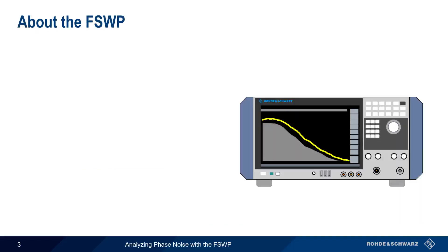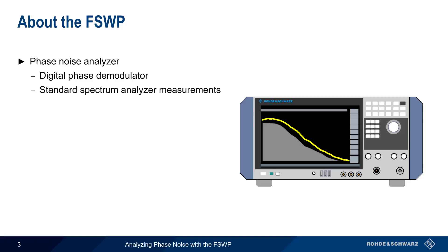Let's start with a brief overview of the FSWP. The Rohde & Schwarz FSWP is a phase noise analyzer that measures phase noise directly using a digital phase demodulator. The FSWP can also make many spectrum analyzer measurements, such as transient analysis, spur search, etc. It can also be configured with a second measurement path that allows phase noise measurements using the cross-correlation method, improving both speed and sensitivity.